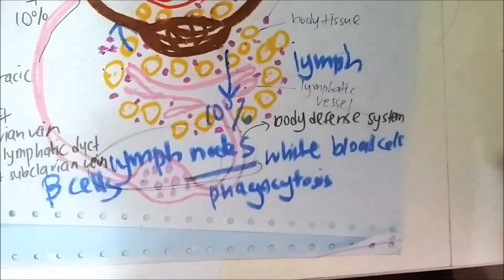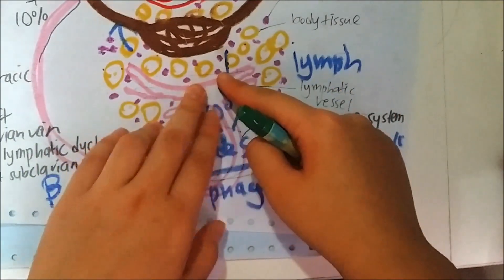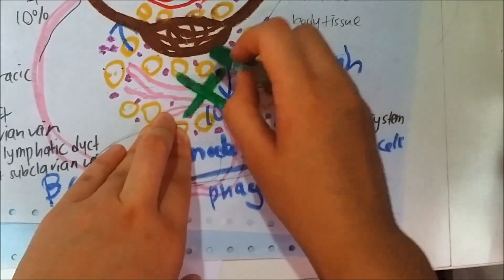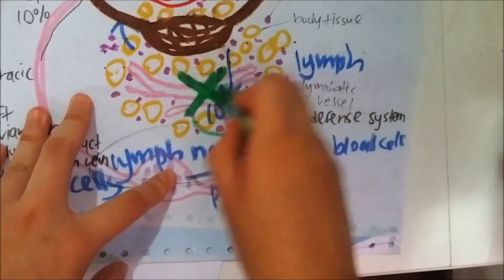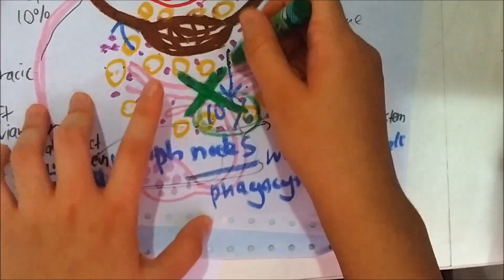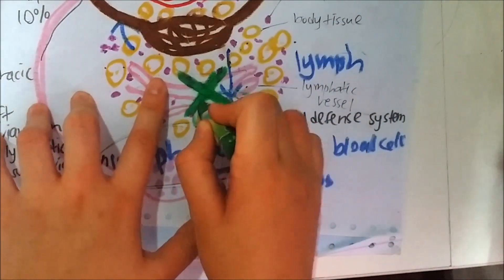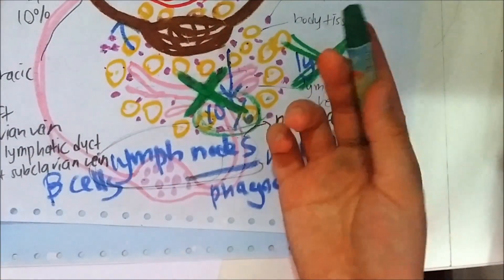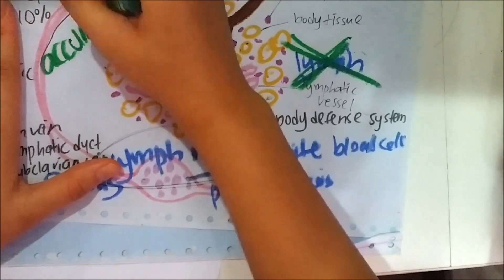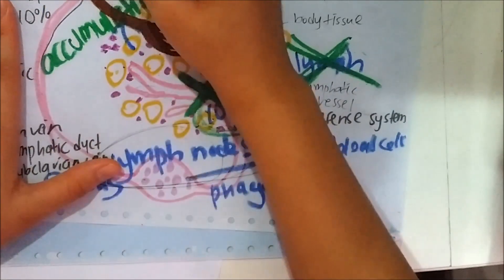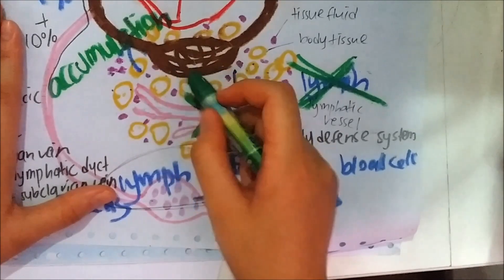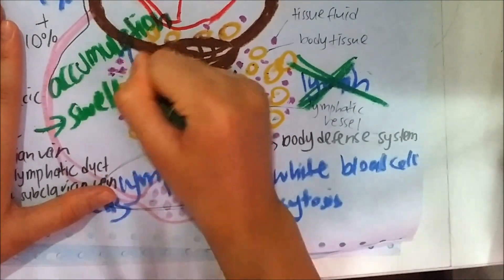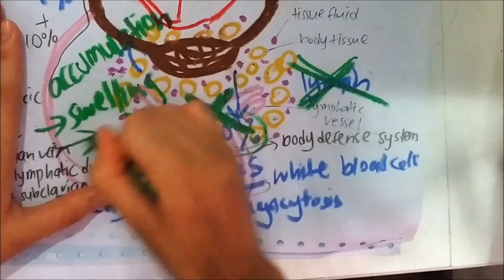What will happen if the lymphatic vessel is blocked? If the lymphatic vessel is blocked, the 10 percent of tissue fluid cannot be transported into the lymphatic vessel to form lymph. When lymph cannot form, it causes an accumulation of tissue fluid, which leads to a condition called oedema.